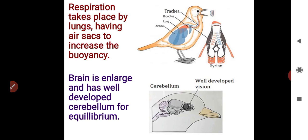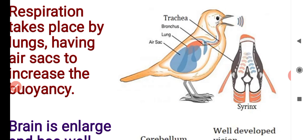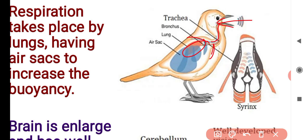Respiration takes place by lungs. Birds have air sacs which increase their air capacity, making it easier to fly. Air enters through the trachea, which bifurcates into bronchi leading to the lungs. The air sacs are connected through the body and also help reduce body weight.